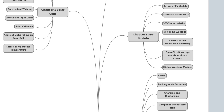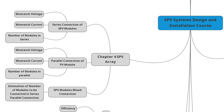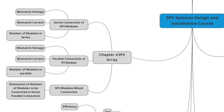Measuring open circuit voltage and short circuit current, higher wattage modules. Chapter 4: Solar PV Module Arrays — connection of modules in series, estimating the number of photovoltaic modules to be connected in parallel, and polar photovoltaic modules in power.